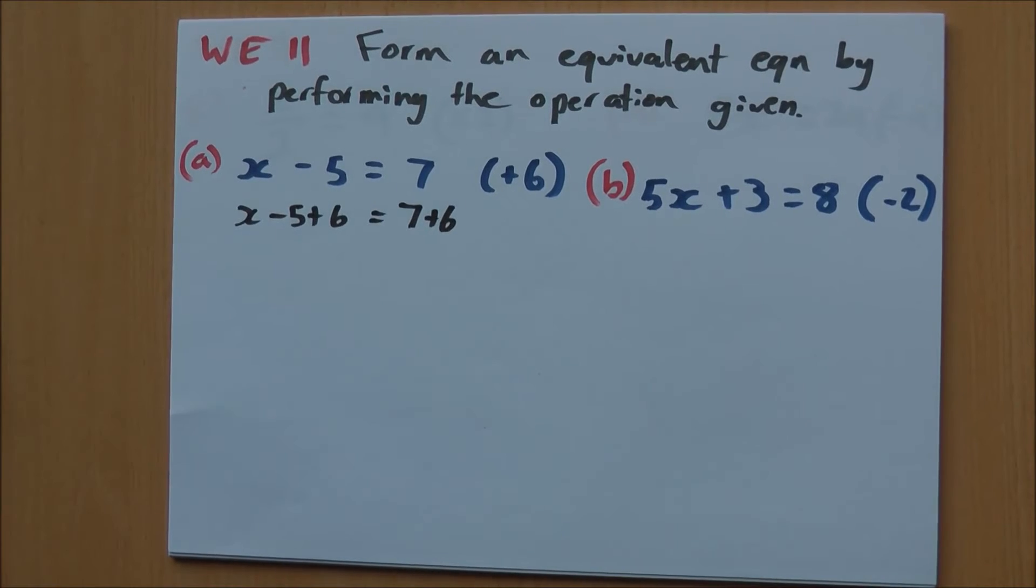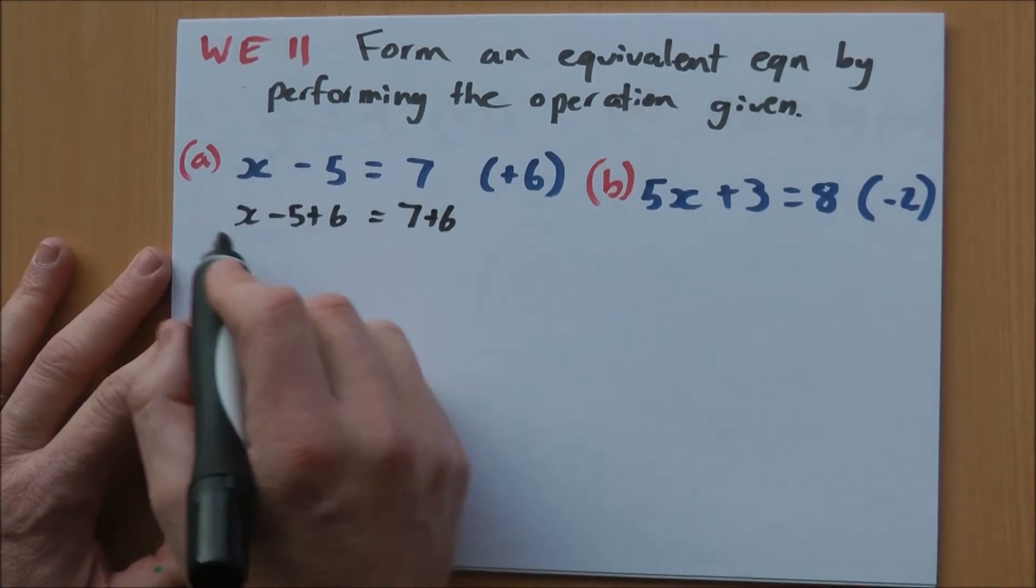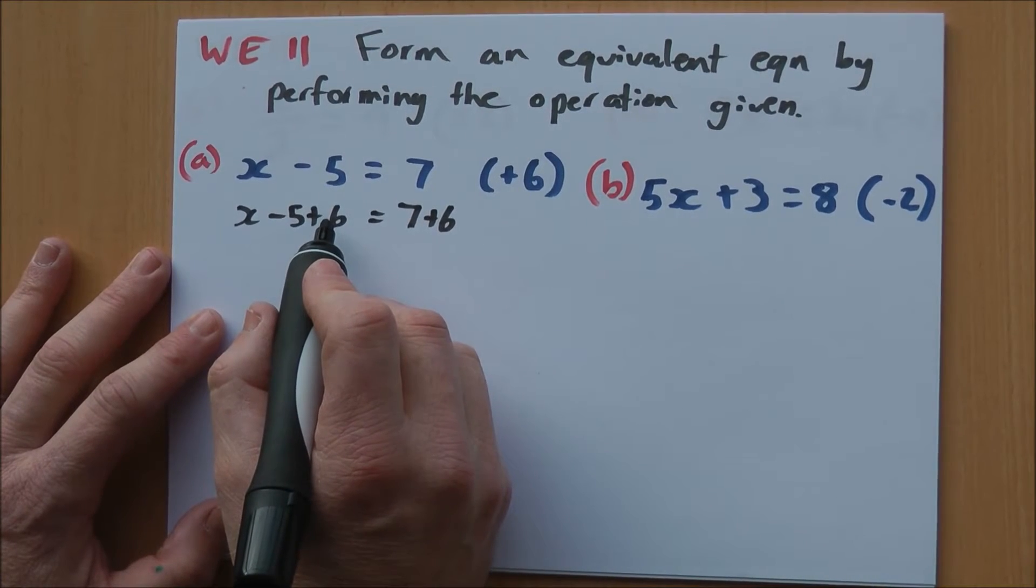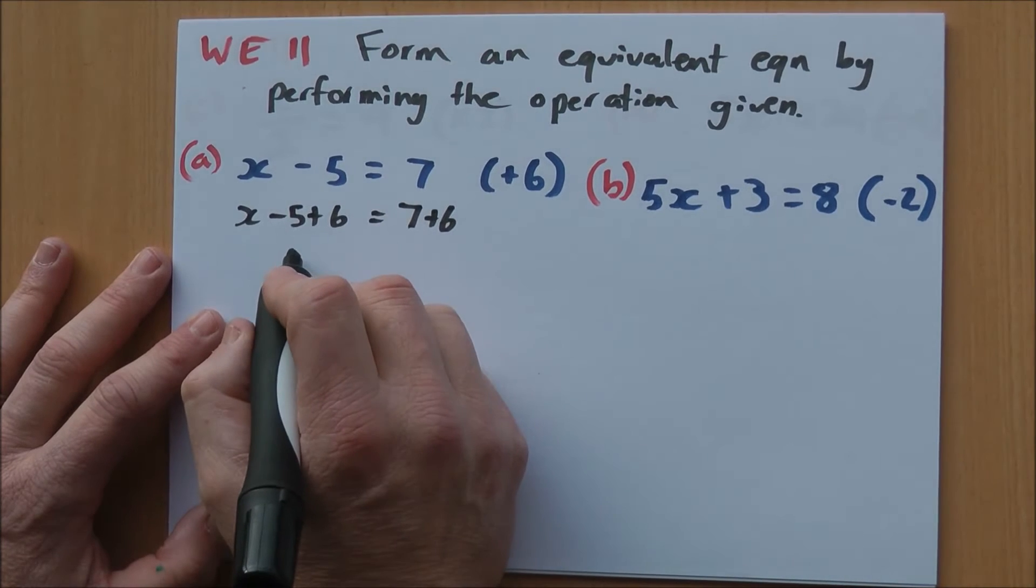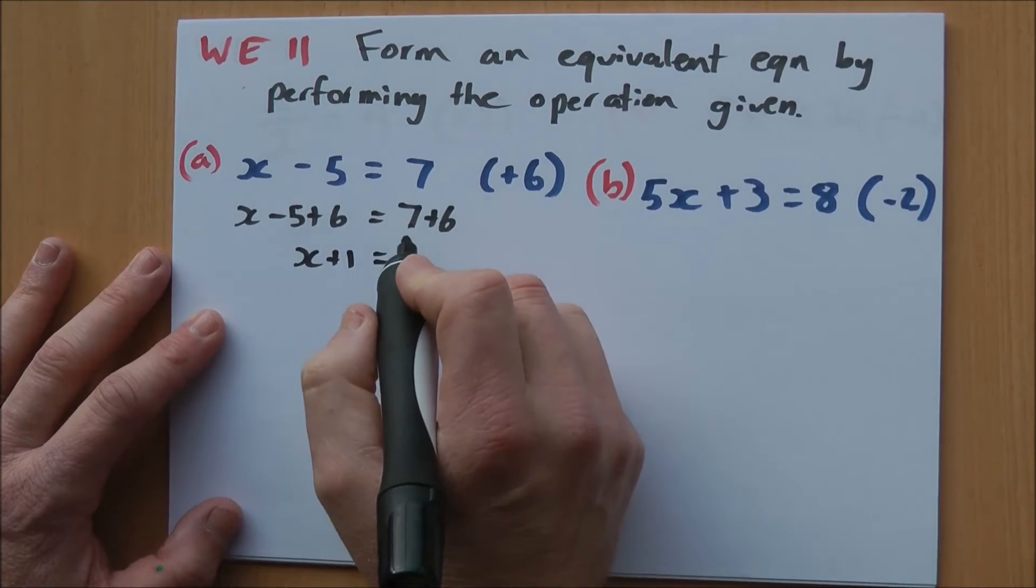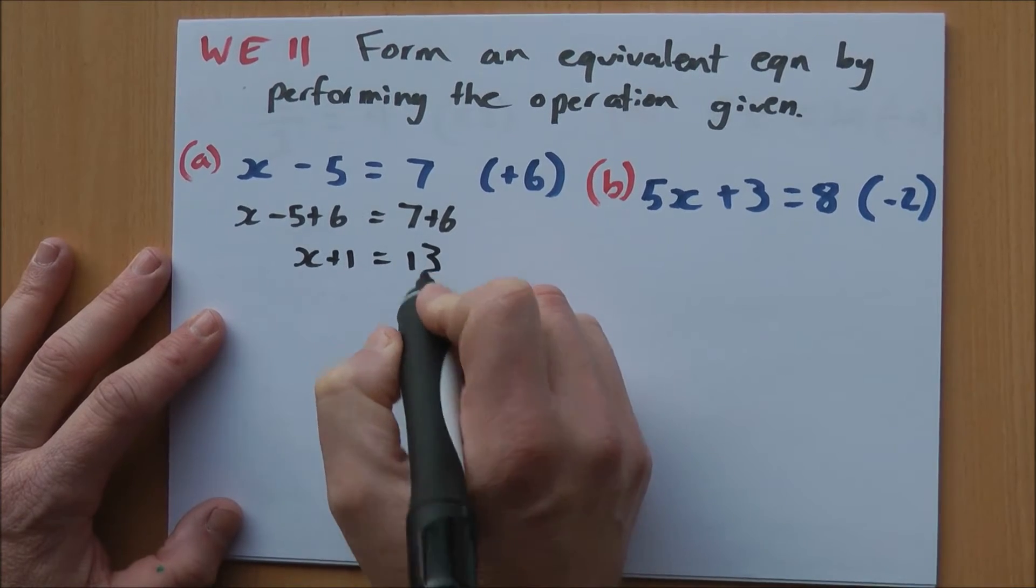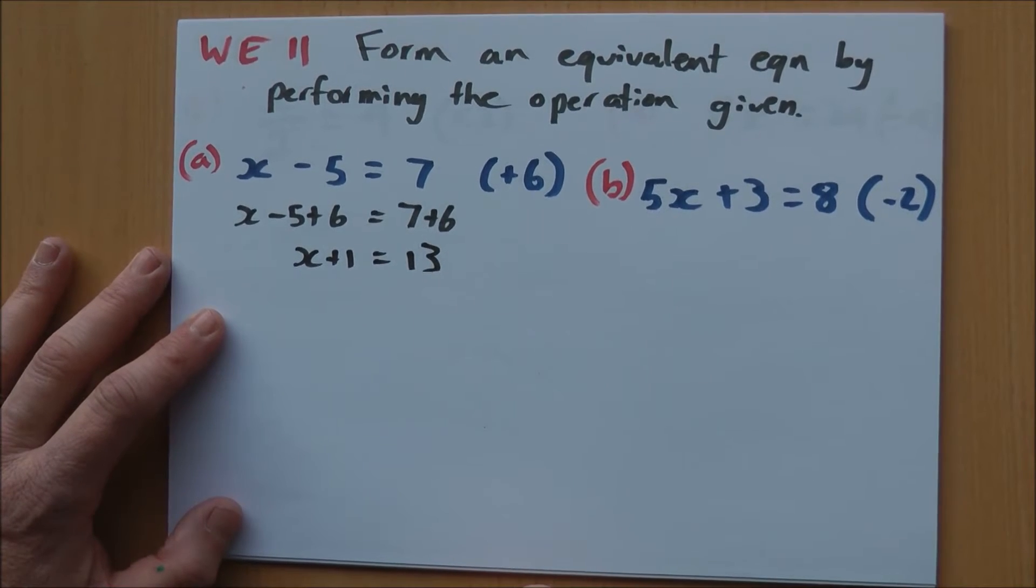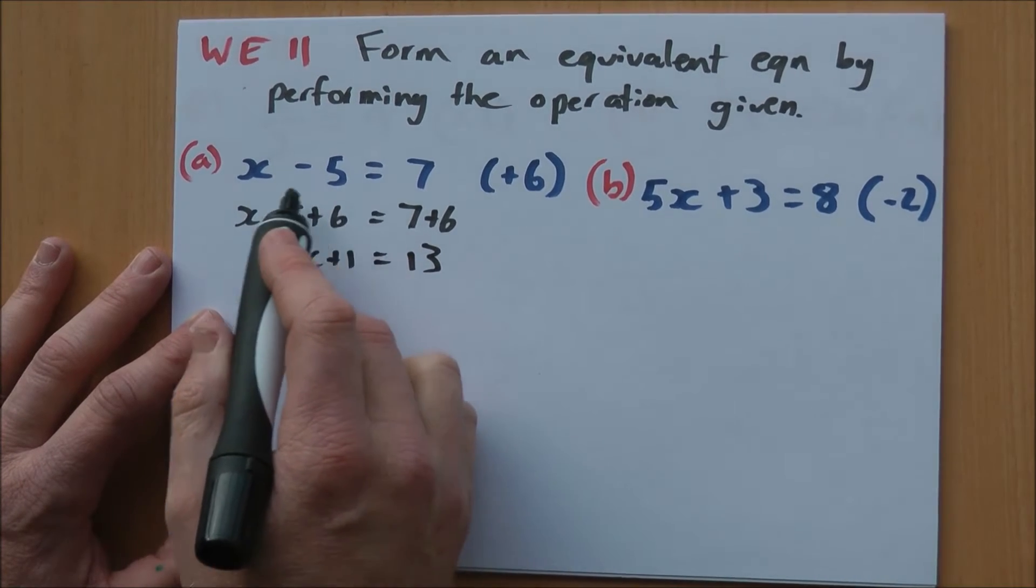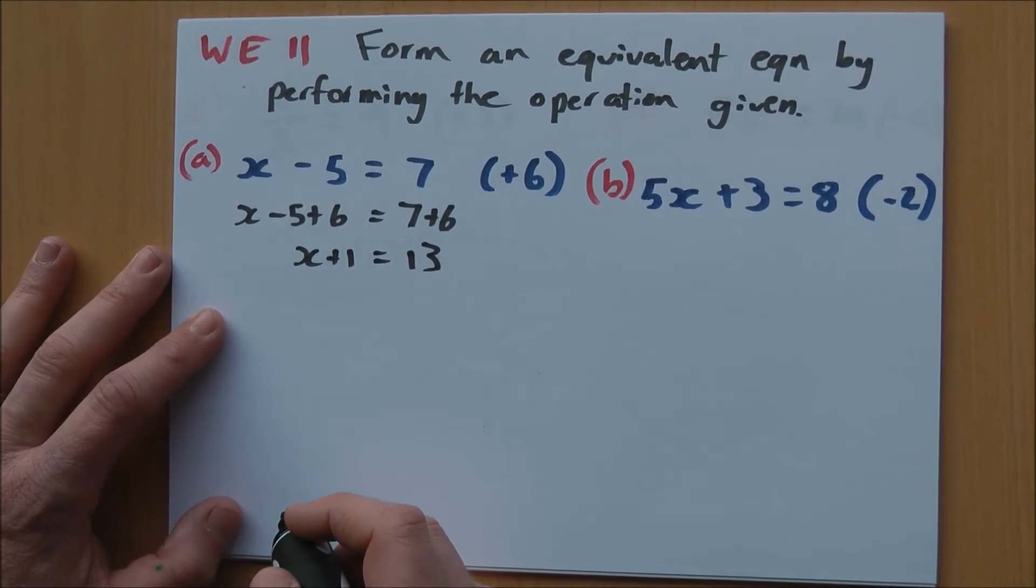You can see I've done it to both sides of my equation. On this side, negative 5 plus 6 equals 1, and I've got my x in there as well. So x plus 1 equals 7 plus 6 is 13. That's as simple as it is. I'm not adding the 6 to the x. I can add it to the like terms. The negative 5 plus 6 I can work out.